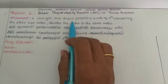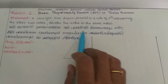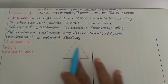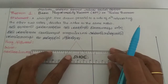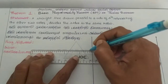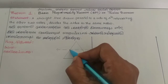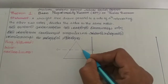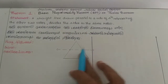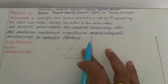So here is the triangle. One side of this triangle has a line drawn parallel to it. This parallel line intersects the remaining two sides of the triangle — it meets and intersects both sides.